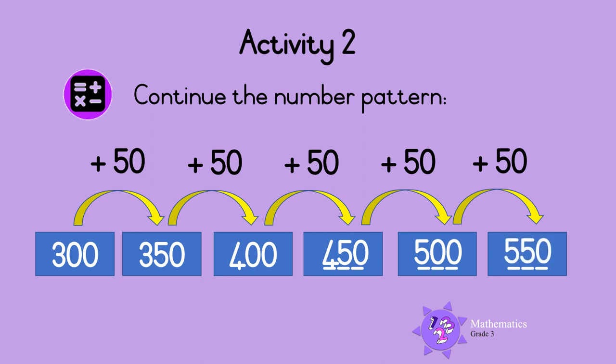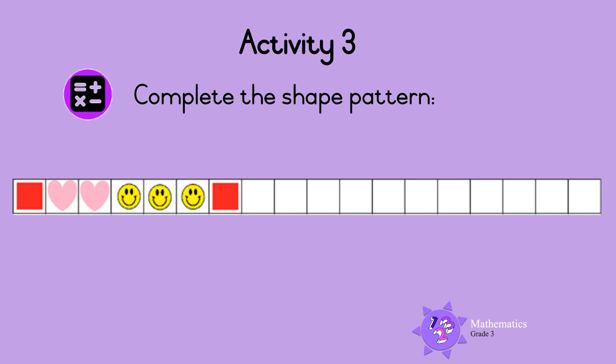Complete the shape pattern. Remember, the pattern must repeat in the same order. The pattern starts with one red square, then two hearts, and then three smileys. Then the pattern repeats: one red square, two hearts, three smileys, and then it repeats. One red square, two hearts, and three smileys. Make your own pattern. Have fun!